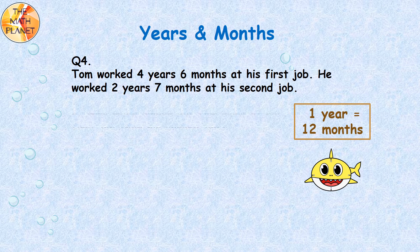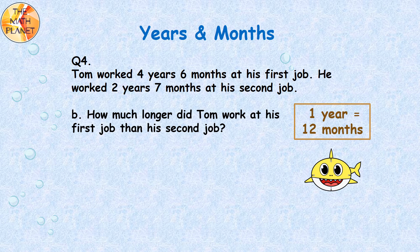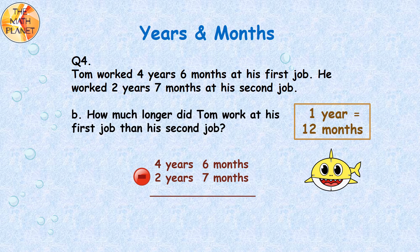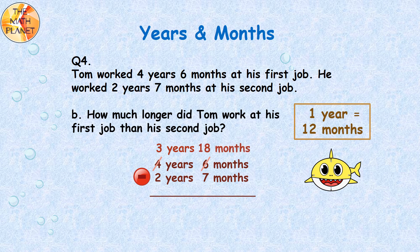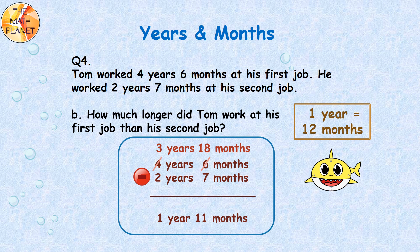Now let's answer question B. How much longer did Tom work at his first job than his second job? The subtraction equation is 4 years 6 months minus 2 years 7 months, and we start subtracting from the months. 6 minus 7 — we cannot take away 7 months from 6 months, so we regroup. We cross the 6 months and cross the 4 years, following the rule 1 year equals 12 months. When we take away 1 year, we have 3 years left and the months become 6 plus 12 equals 18 months. The difference is 1 year 11 months. Tom worked 1 year 11 months longer at his first job.